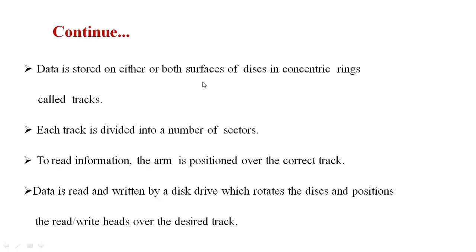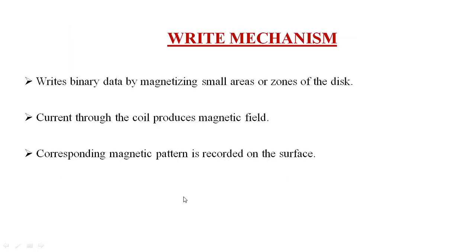The data is stored on either full surface of the disk in concentric rings called tracks. Each track is divided into a number of sectors. To read the information, the arm is positioned over the current track. Each rotation of the disk positions the read or write heads over the track. The camera writes binary data by magnetizing small areas or zones of the disk, and the current through the coil produces a magnetic field. The corresponding magnetic pattern is recorded on the surface.